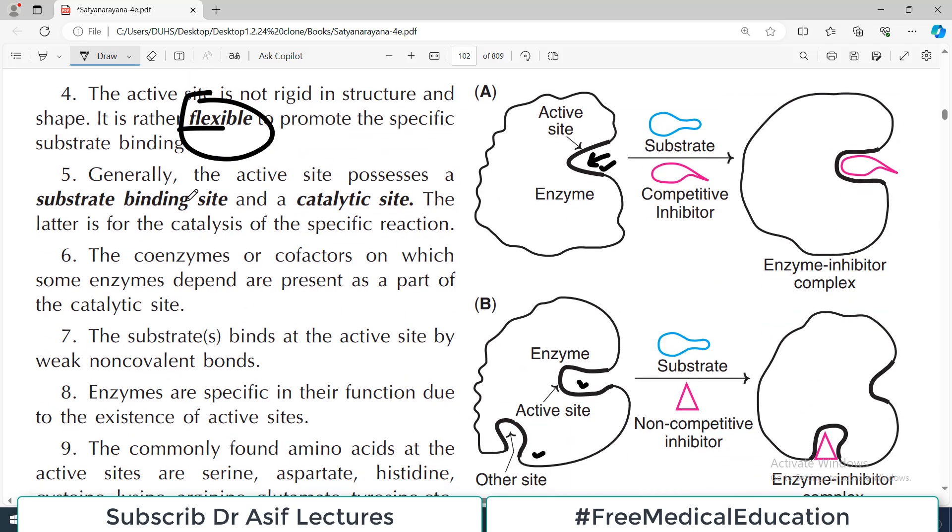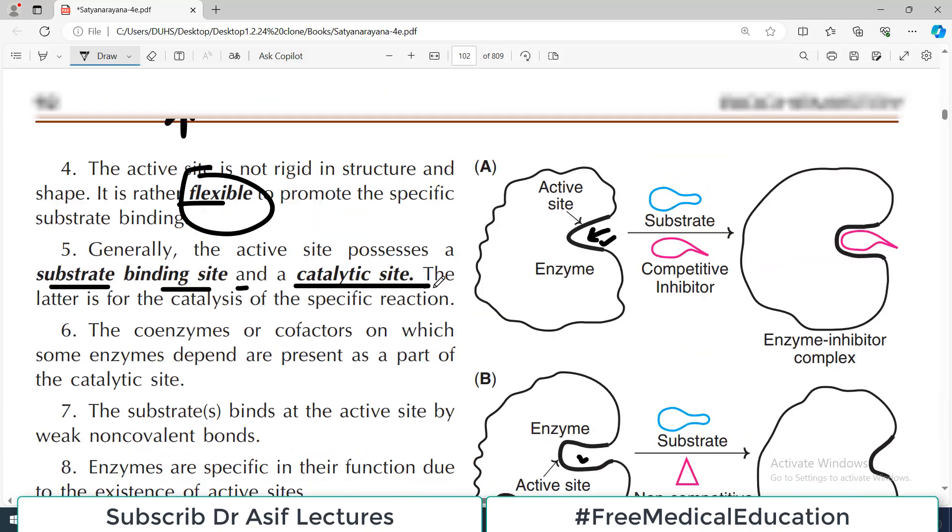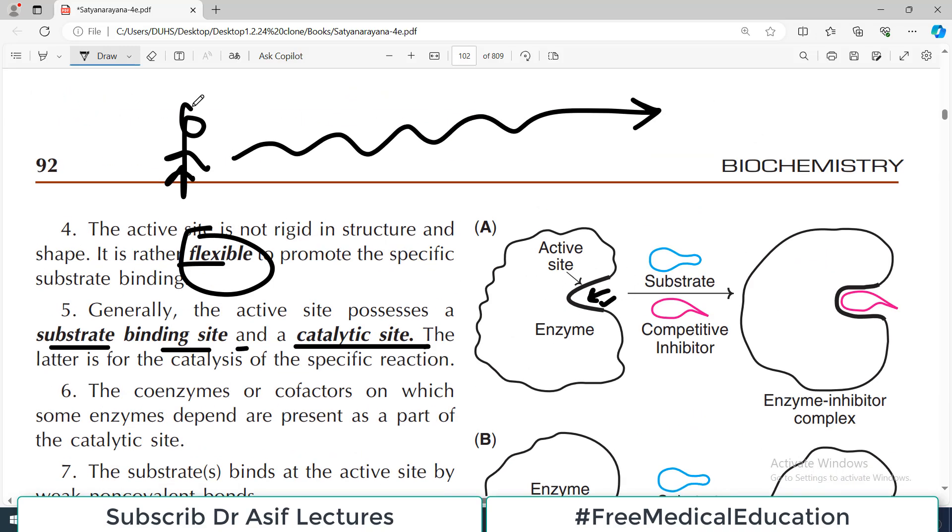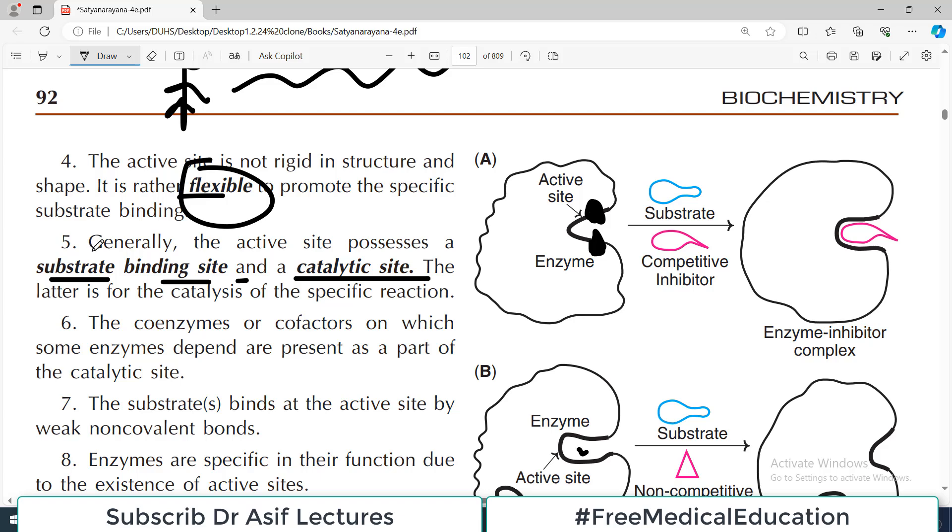Now generally the active site possesses a substrate binding site and a catalytic site. The catalytic site is for the catalysis. Usually there is one point where the substrate binds, and then the other point is where the chemical reaction will actually be monitored. The substrate binding site is usually different from the catalytic site on the active site.